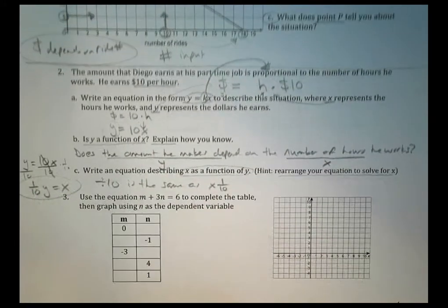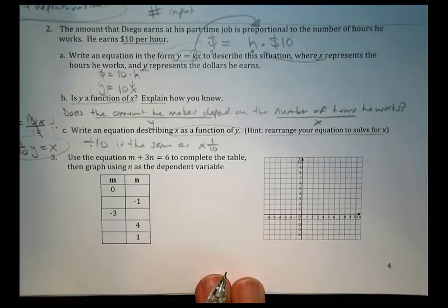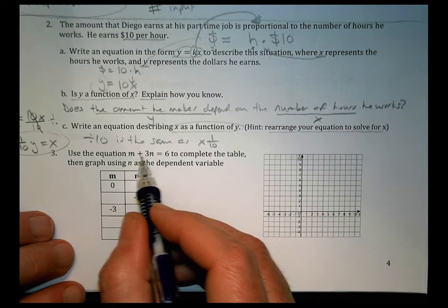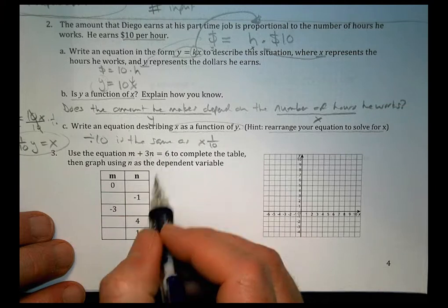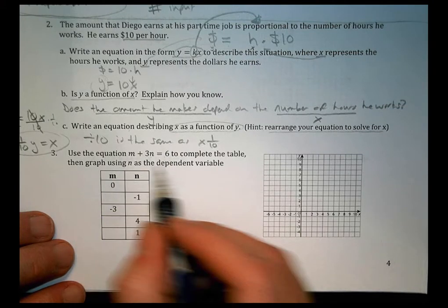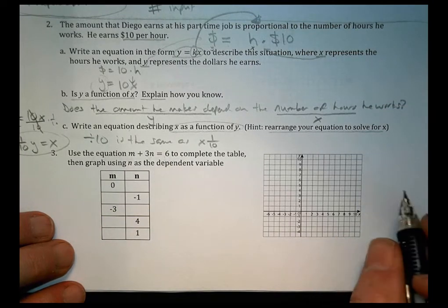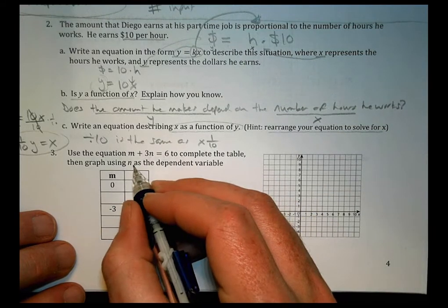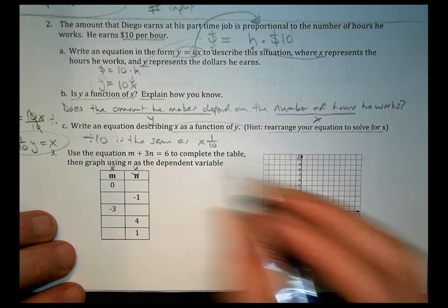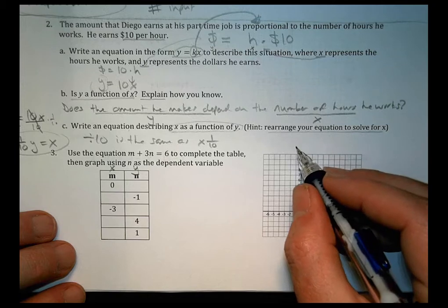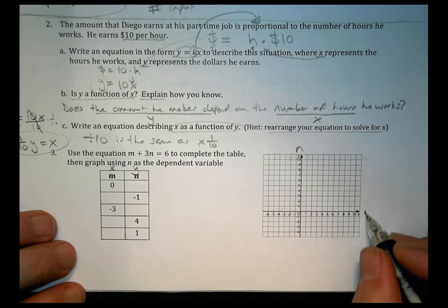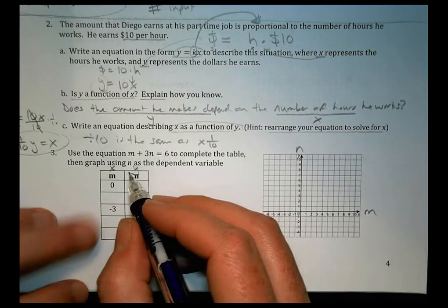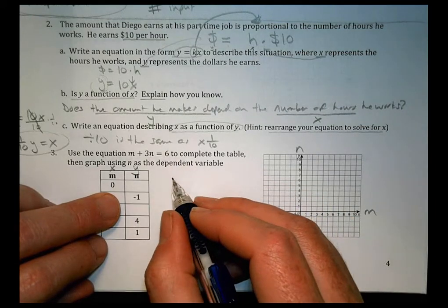All right, number three. Last one for today. Use the equation N plus 3N equals 6 to complete the table. Then graph using N as the dependent variable. So this becomes our Y and our X. This is our N over here. This is our M over there. So let's just put these numbers in.